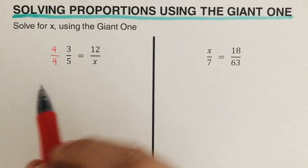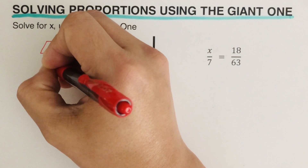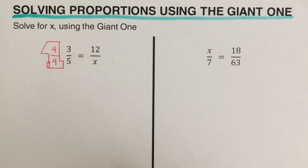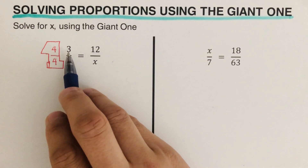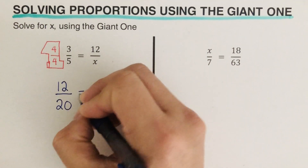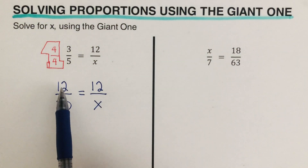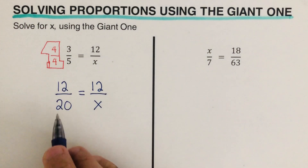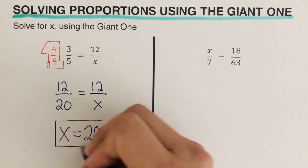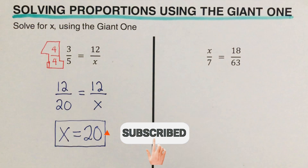When we have four divided by four, that's actually one — that's why this is called the giant one. So multiplying by four over four is multiplying by the giant one. Four times three is 12, and four times five is 20. That equals the other side: 12 over x. Both numerators are the same, which means both denominators are also the same, so x is 20.